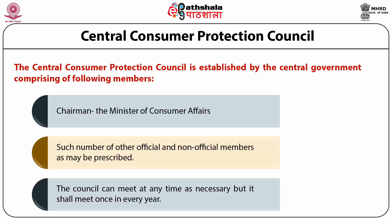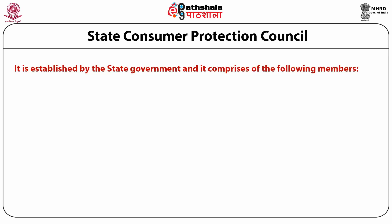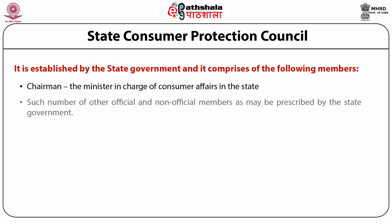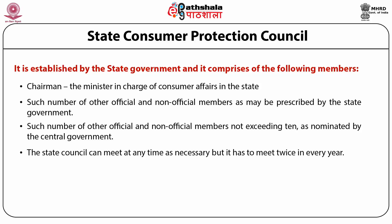The Central Council can meet at any time as necessary, but it shall meet at least once a year. The State Consumer Protection Council is established by the State Government, comprising the Minister in charge of Consumer Affairs in the State as Chairman, such number of official and non-official members as prescribed by the State Government, and not exceeding ten members nominated by the Central Government. The State Council can meet at any time as necessary but must meet twice every year.